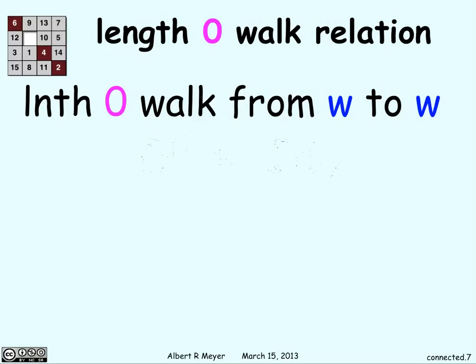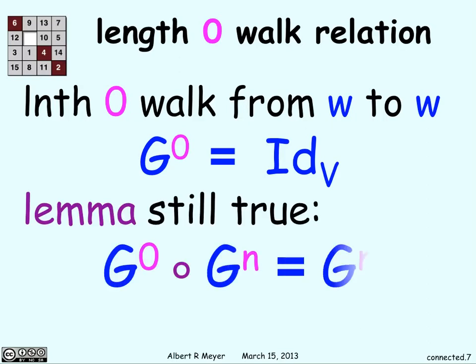The length zero walk relation just makes each vertex go back to itself, like it points back to itself, the identity. And the lemma is still true. G^0 composed with g^n is just g^n, which makes sense. Everything itself plus g^n just gives you g^n.